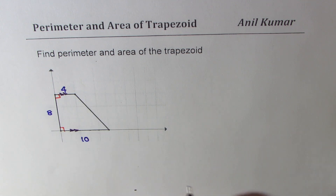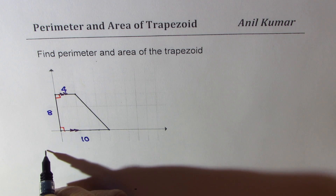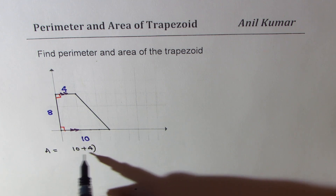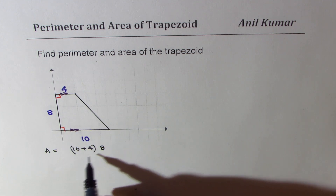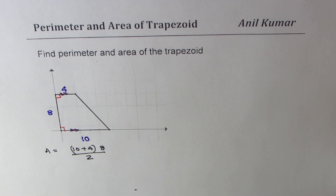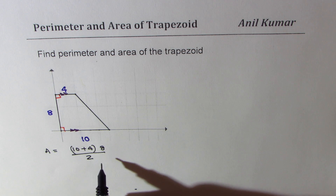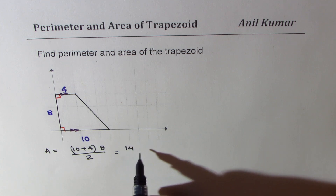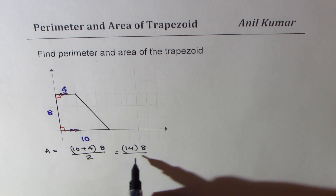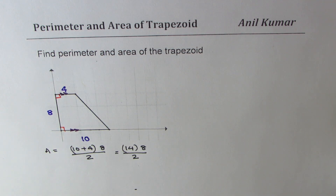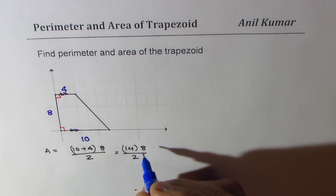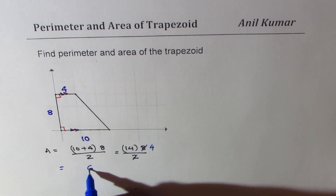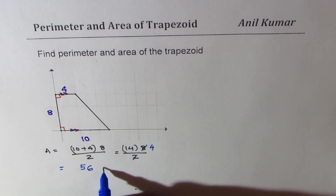From the given information, we can directly find the area. Area of this trapezoid will be equal to sum of the two parallel sides, which is 10 plus 4, times 8 the height, divided by 2. So we get 10 plus 4 as 14, times 8, divided by 2. 8 divided by 2 gives you 4, and then 14 times 4 gives you 56 units squared.